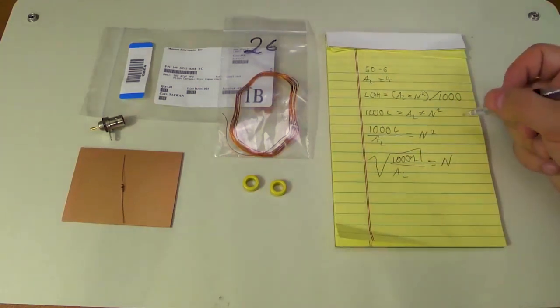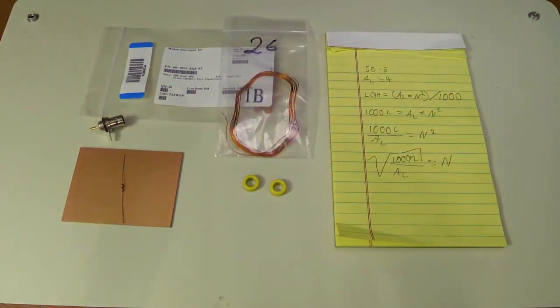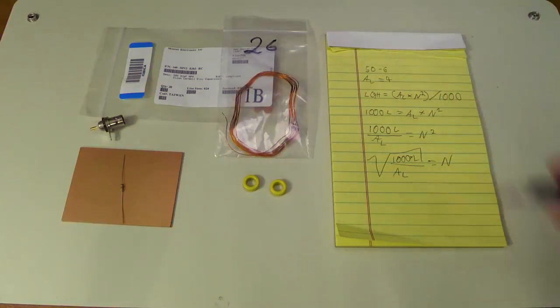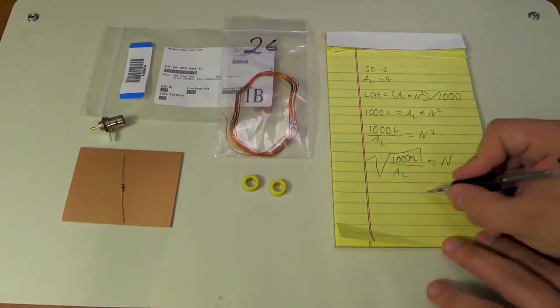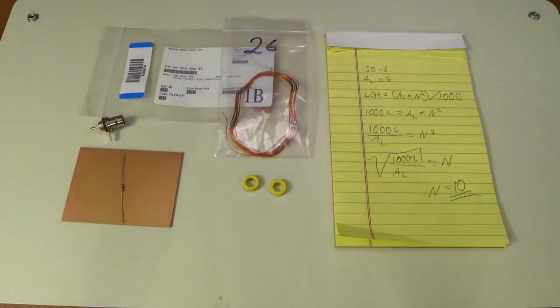Now we don't need a calculator to really do that. This is supposed to be in microhenrys, so we want 400 nanohenrys. That's 0.4 microhenrys times 1,000 gets us up to 400. So microhenrys in that case, if we multiply nanohenrys by 1,000 divided by AL. For this here, it's 4. So 400 divided by 4, very easy, is 100. And the square root of 100 equals 10. So that means N equals 10. We need 10 windings on this toroid, and I'm going to use this magnet wire here.